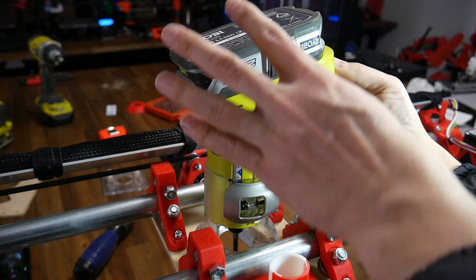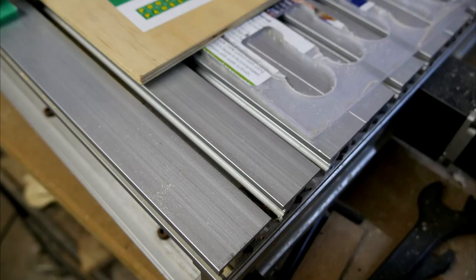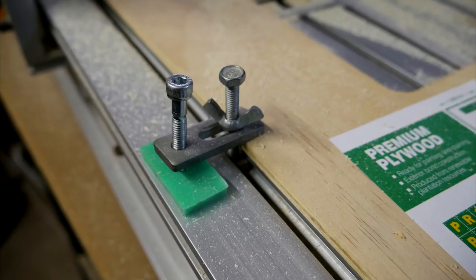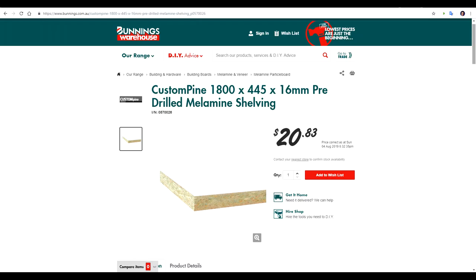This was a really satisfying feeling to finally have the router in place and to be able to cut something. After verifying that everything was sound it was time to move on to the next problem and that was mounting stock to the bed. All of the CNC routers I'd used thus far had some slot extrusion on the bed with little clamps to mount your stock.